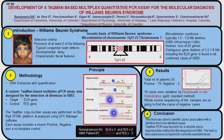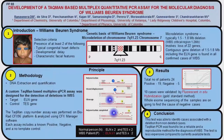This TaqMan probe has a reporter on its 5' end and a quencher at the 3' end. Due to the reporter and quencher's close proximity, there is no fluorescence emitted. During the PCR, in the annealing and extension step, the TaqMan probe comes and binds to the target, and the primers anneal and start to extend. Then the 5' exonuclease activity of the Taq polymerase cleaves the reporter, thus separating the reporter and quencher. Once separated, a fluorescence signal is emitted.